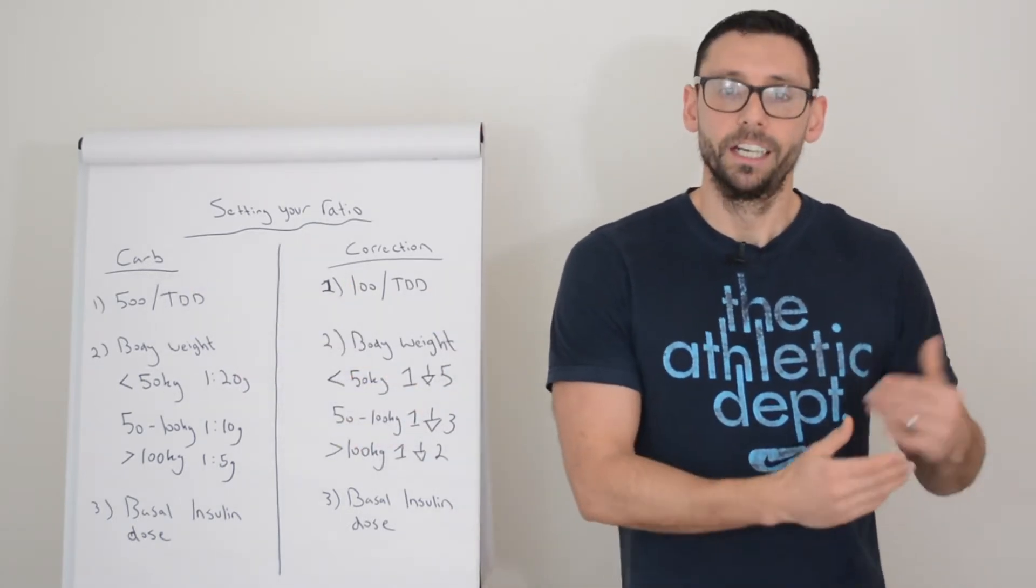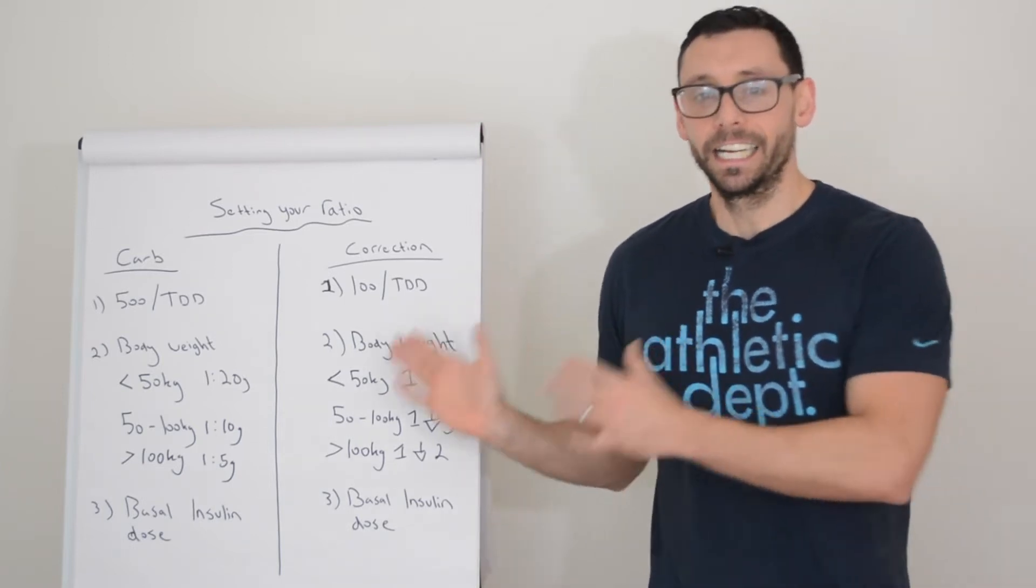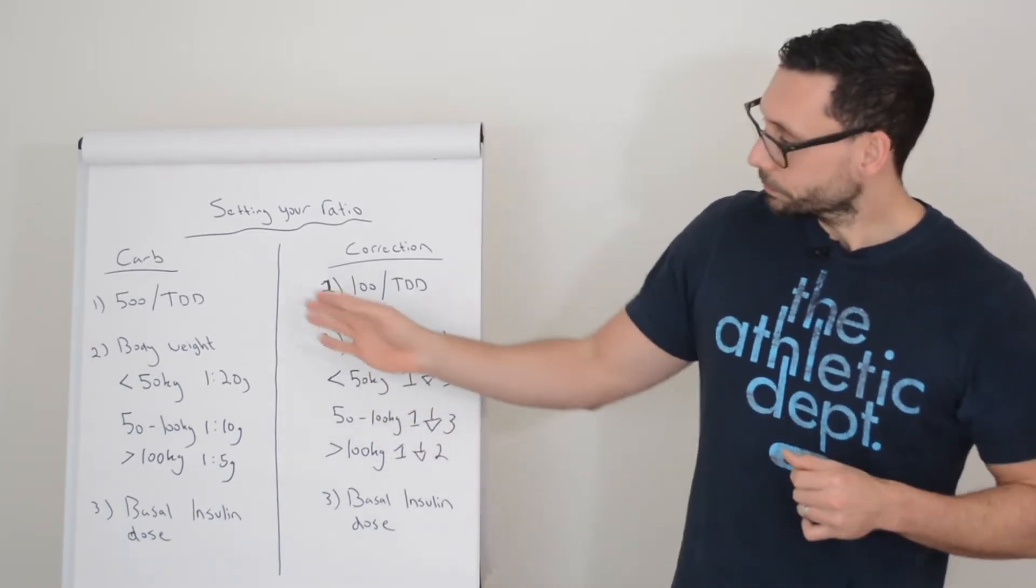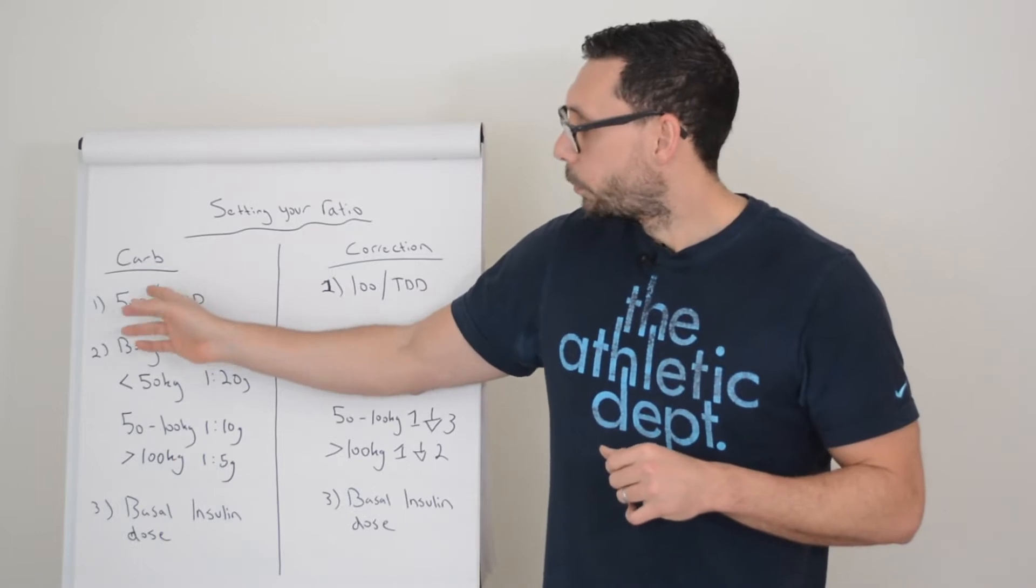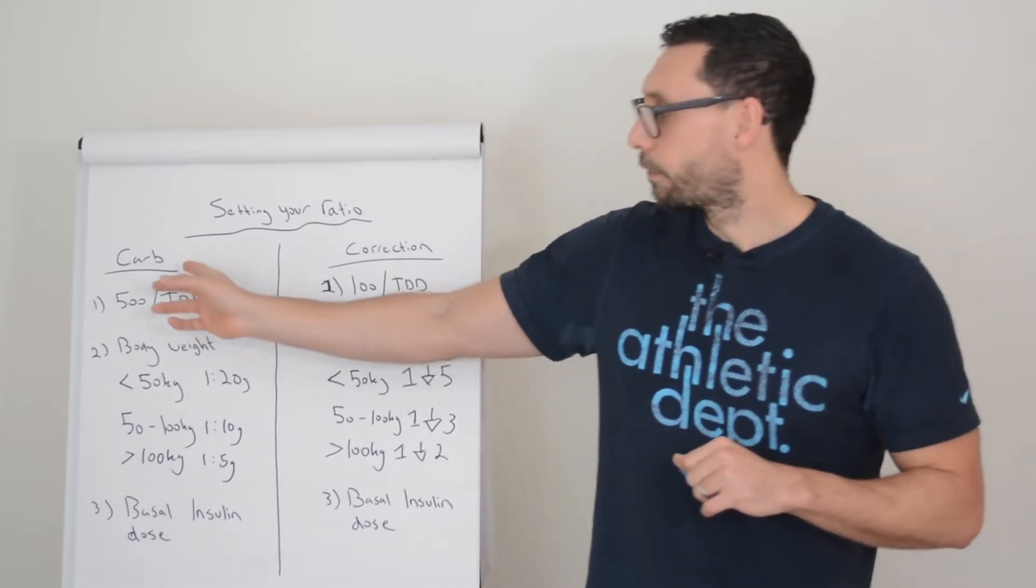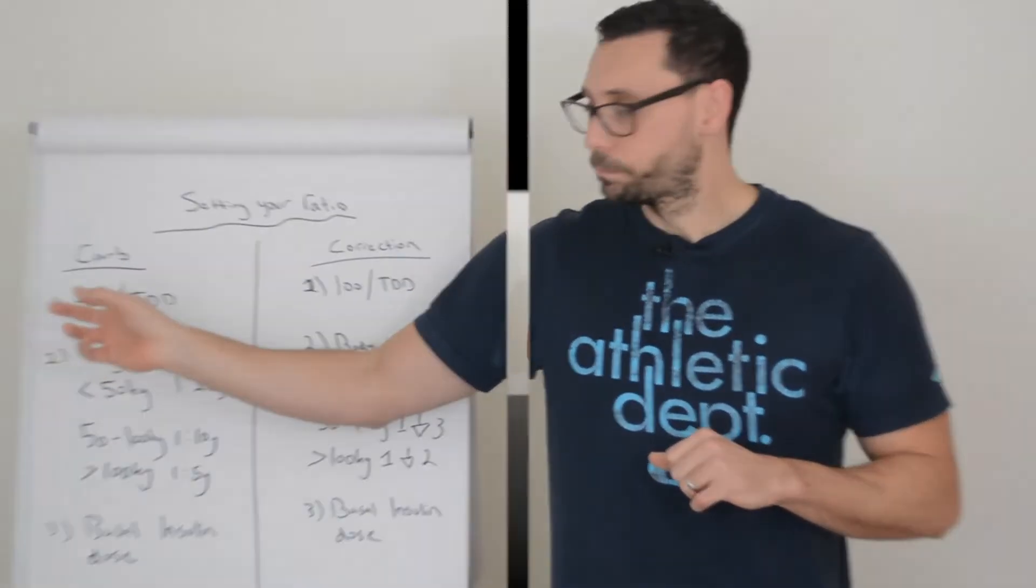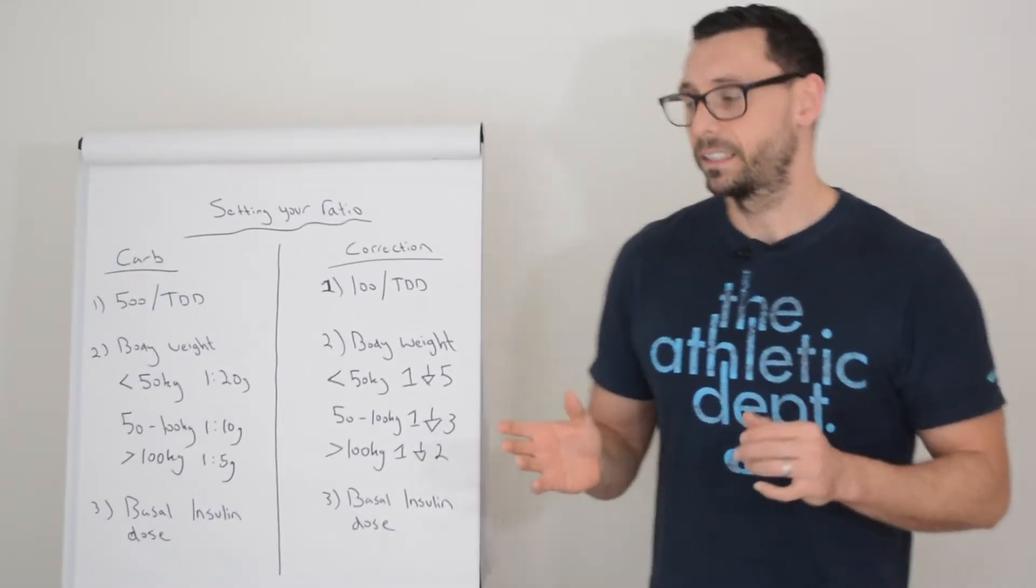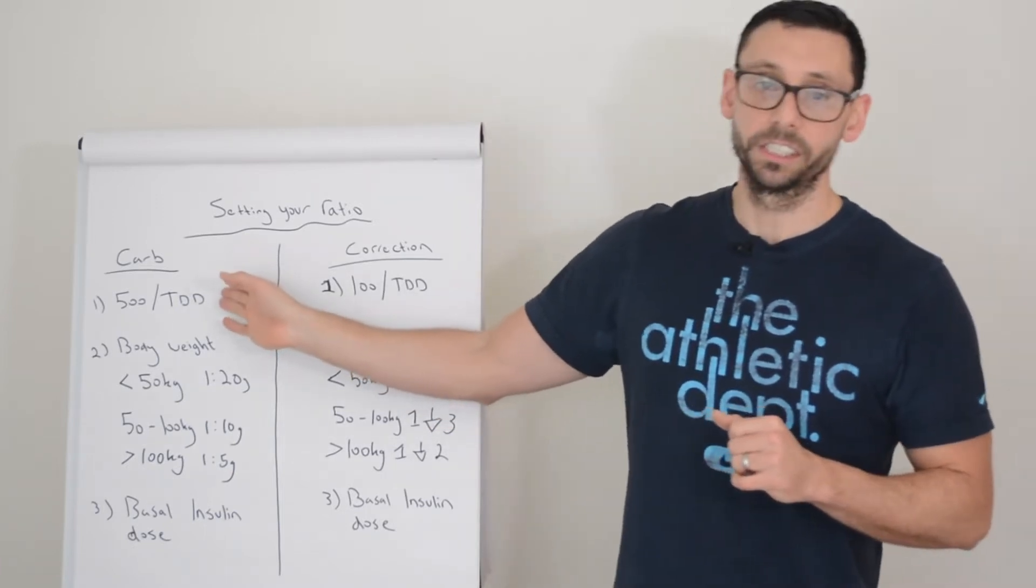Some people also use the 400 rule. If you ever come across that, it's the same principle but rather than 500 they use 400. Of course, one of the other drawbacks of this method is if you're taking too much insulin.